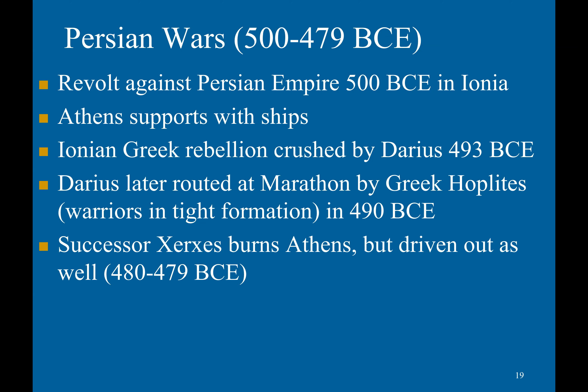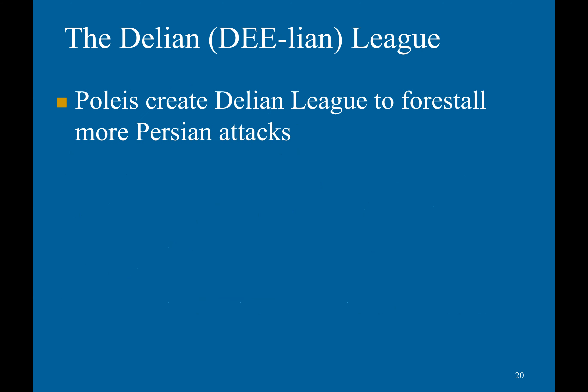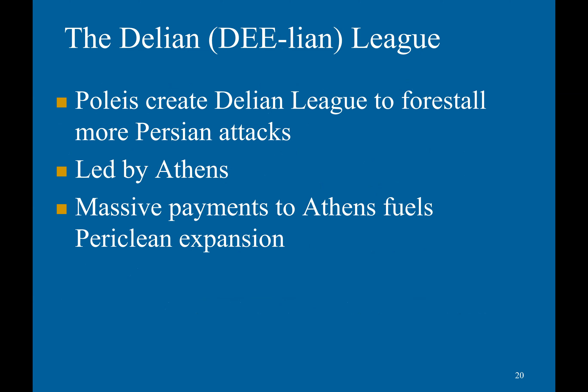His successor Xerxes was able to burn down Athens, but was driven out as well. Some major Greek victories included the Sea Battle of Salamis and the Land Battle of Plataea. As a result of these devastating attacks, the city-states created the Delian League to forestall more Persian attacks, led by Athens, with all city-states paying money to Athens.